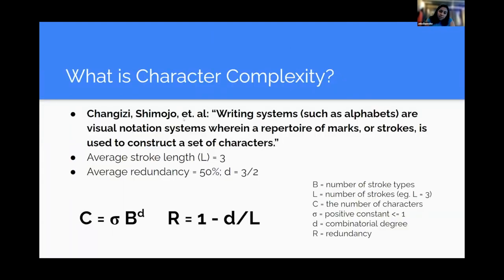So to start off, I want to discuss what is character complexity and what are characters. We worked with a paper written by Changizi, Shimojo, et al., and they defined writing systems as visual notation systems wherein a repertoire of marks or strokes are used to construct a set of characters. They studied this complexity within writing systems by looking at things such as the average stroke length it takes to create a character and the average redundancy within characters. As you can see on the bottom of this slide, they used these two formulas to figure out their results. The formulas are C = σ B^d and R = 1 - d/L.